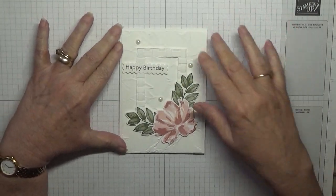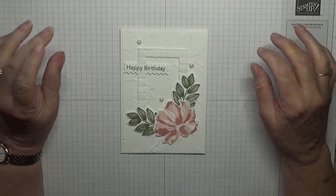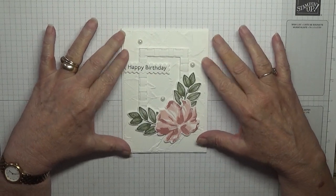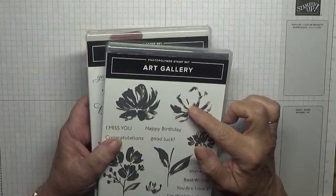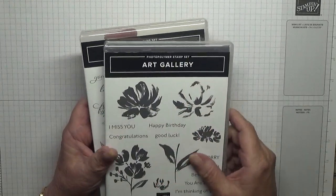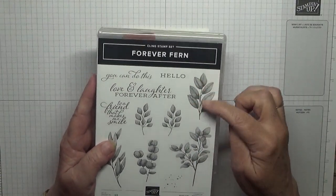Hello, Georgie B back today. I'd like to show you how I made this pretty card. It's quite simple. I've used the stamp sets Art Gallery - I've used these two images and the happy birthday - and I've used Forever Fern for that leaf there.